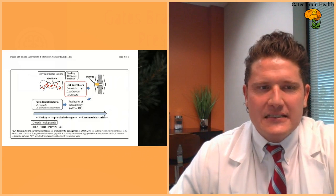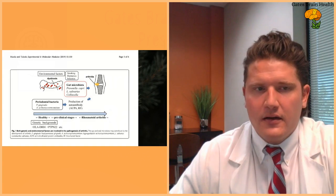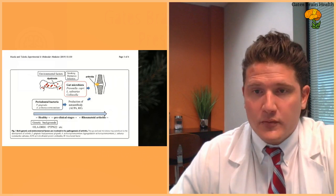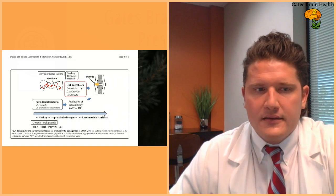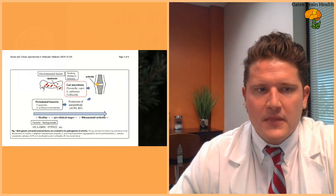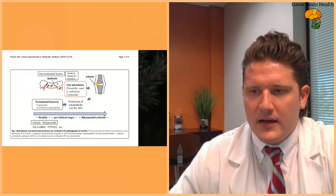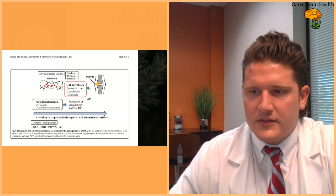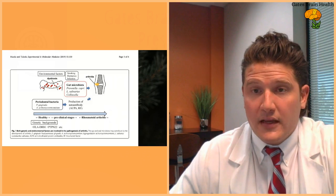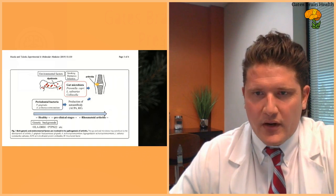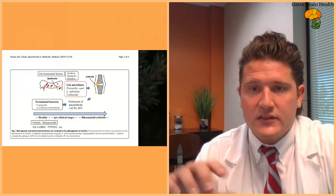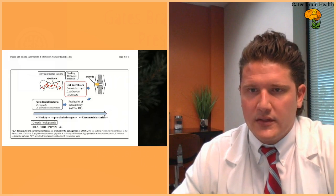So what I was saying is that these periodontal bacteria, we're finding more and more evidence that they can really impact rheumatoid arthritis significantly. And as is referred to here in this diagram, Porphyromonas gingivalis, as well as Actinomyces types of bacteria, are very influential in the production of antibodies seen in rheumatoid arthritis.